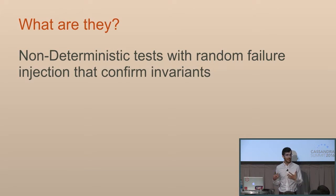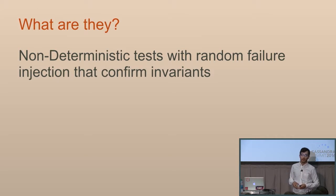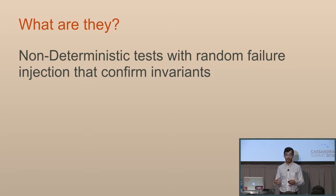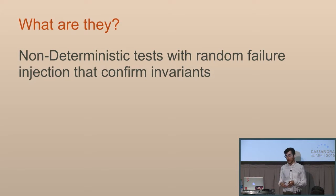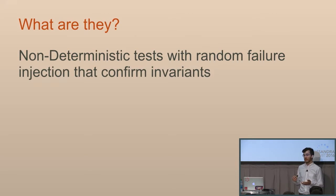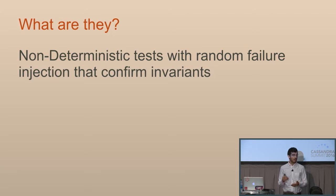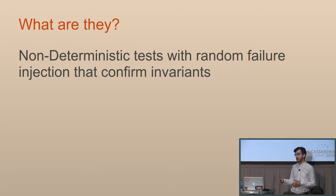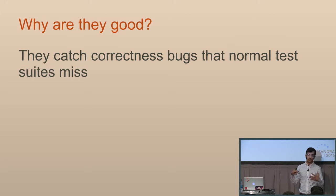These are non-deterministic tests with random failure injection. You set up Cassandra and inject failure — nodes drop, network latency shows up, disks are lost — and it's testing the entire time that invariants are maintained. That means: if a transaction went through and you got an ack back, later reads all show that data is there. It's testing that if you write at quorum, any single read at quorum has that up-to-date data — our consistency guarantees hold no matter what.